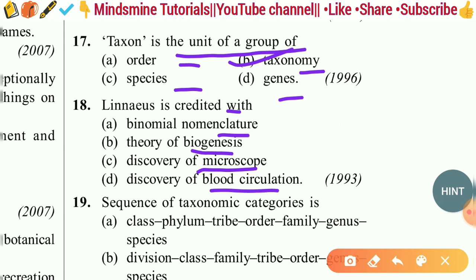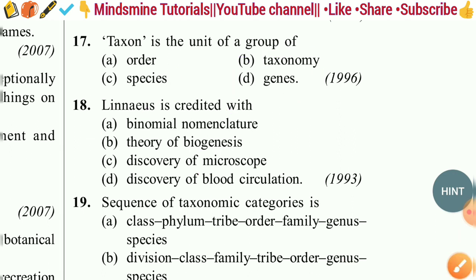Question eighteen: Linnaeus is credited with — binomial nomenclature, theories of biogenesis, discovery of the microscope, or discovery of blood circulation? The correct answer is option A — binomial nomenclature.